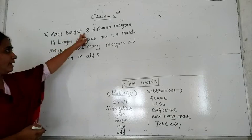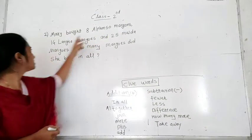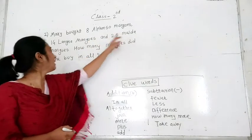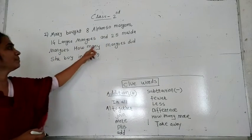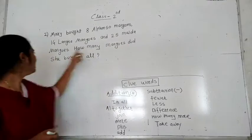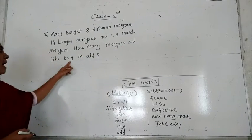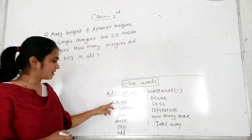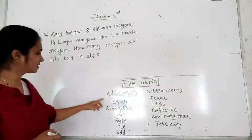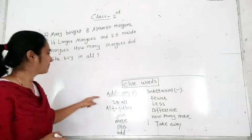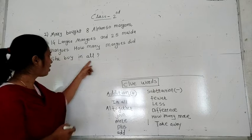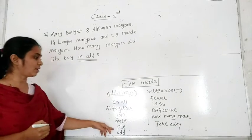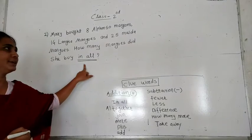Millie bought 8 Alphonso mangoes, 14 Langra mangoes, and 25 Langra mangoes. How many mangoes did she buy in all? First we go to the clue words and find out which clue words are in the problem. The clue word is 'in all', which is in the addition column. So we have to do addition.